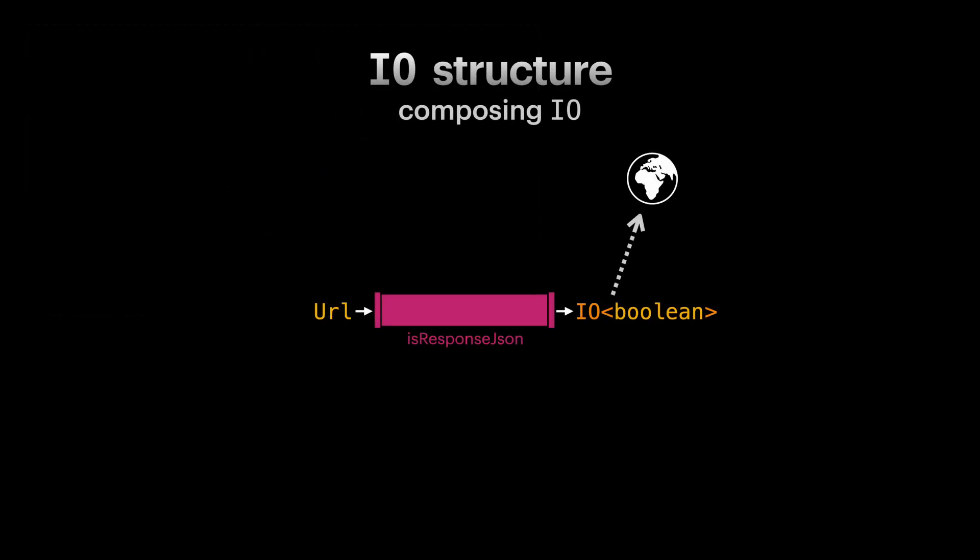But the main idea here is, if we can compose functions that return IO with other functions, hopefully we can push and delay our side effects all the way to the edge of our application. This allows us to write our application logic without executing any side effects until we are ready to do so.